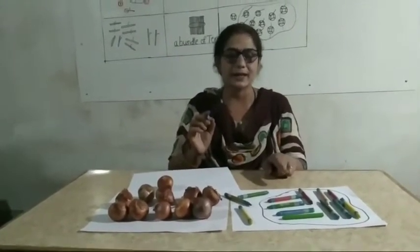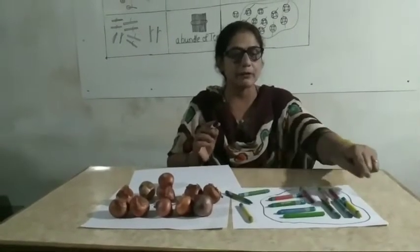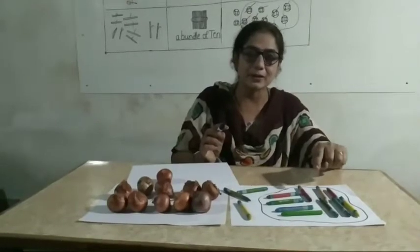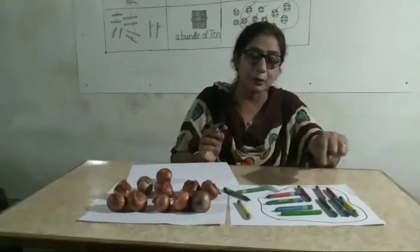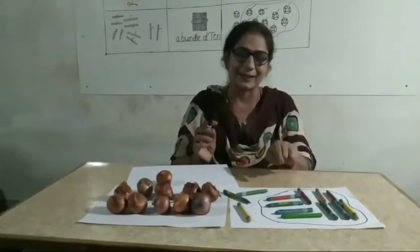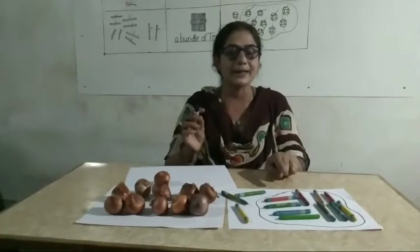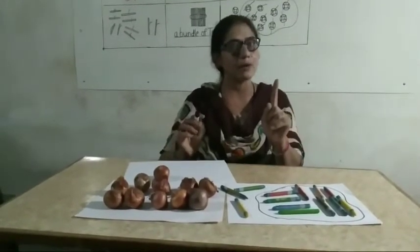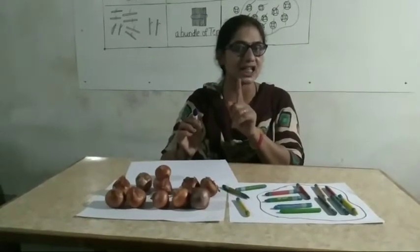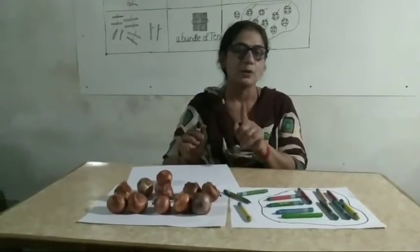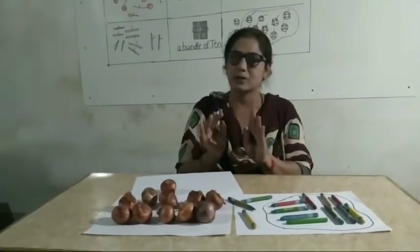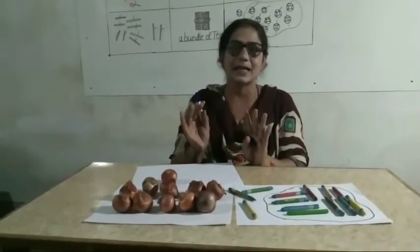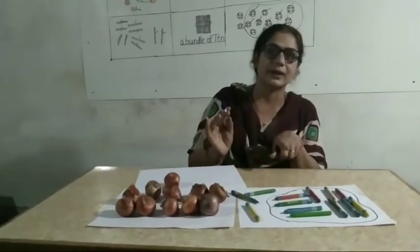Understood, student. This mein kitne hota hai — one ten mein? One group mein kitne hota hai? Ten. Understood? How many? Ten. Samajh na hai — one ten bolega to aap kya samajhna chahiye? Us mein ten hota hai. One group bolega to ten. Understood? Ten.